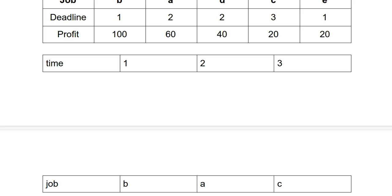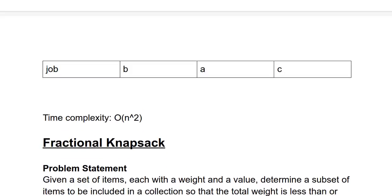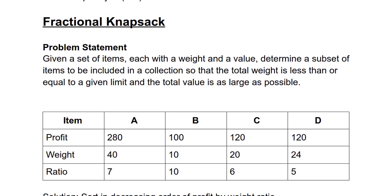Now let us look at another example where greedy approach can be used: the fractional knapsack problem. Its problem statement is: given a set of items, each with a weight and a value, determine a subset of items to be included in a collection so that the total weight is less than or equal to a given limit and the total value is as large as possible. So in fractional knapsack problem you can also include a part of or a fraction of the item.